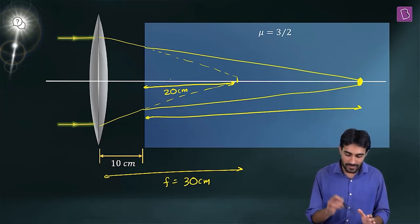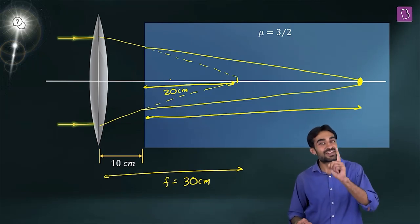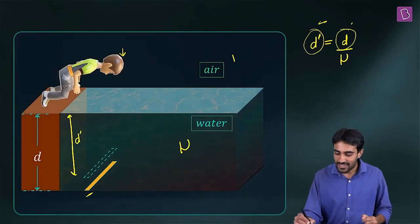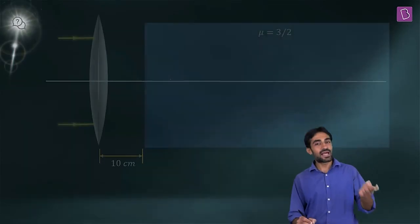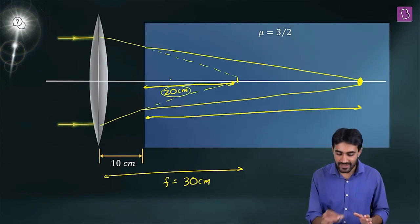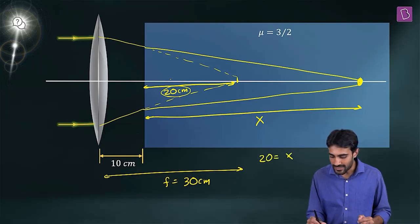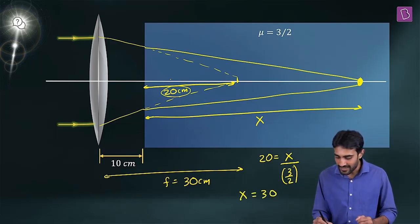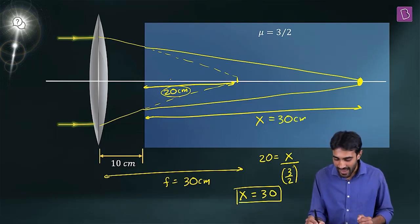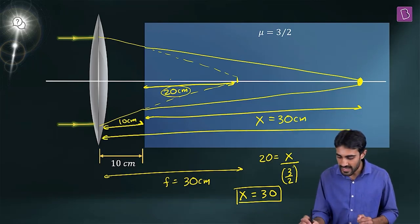If we find the distance from the surface, we just add 10 to get the distance from the lens. Using D' = D/mu: the apparent distance is 20 cm, and the actual distance X satisfies 20 = X / (3/2), so X = 30 cm. The total distance from the lens is 10 + 30 = 40 cm.